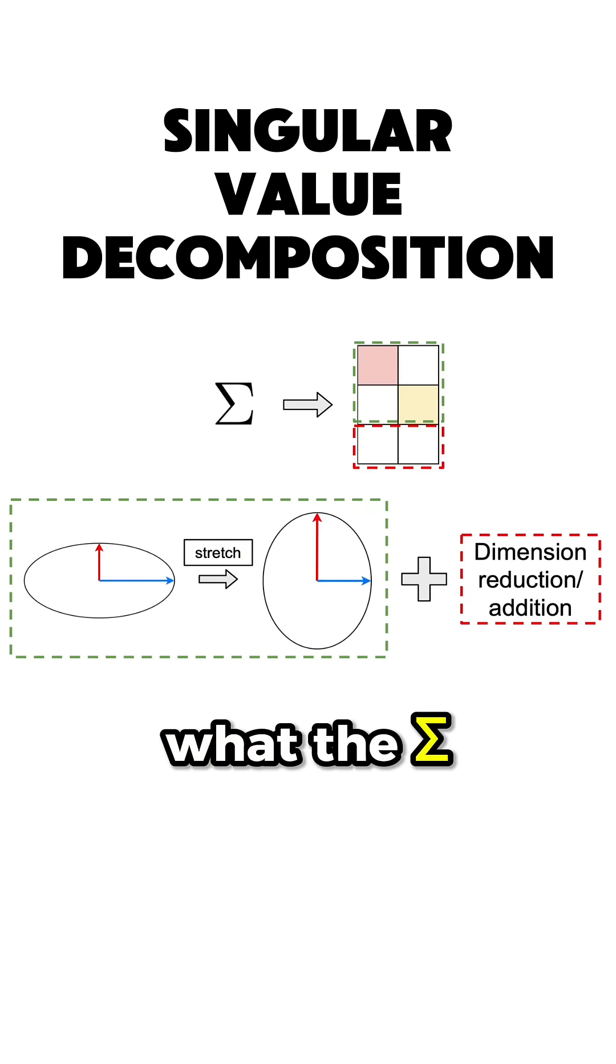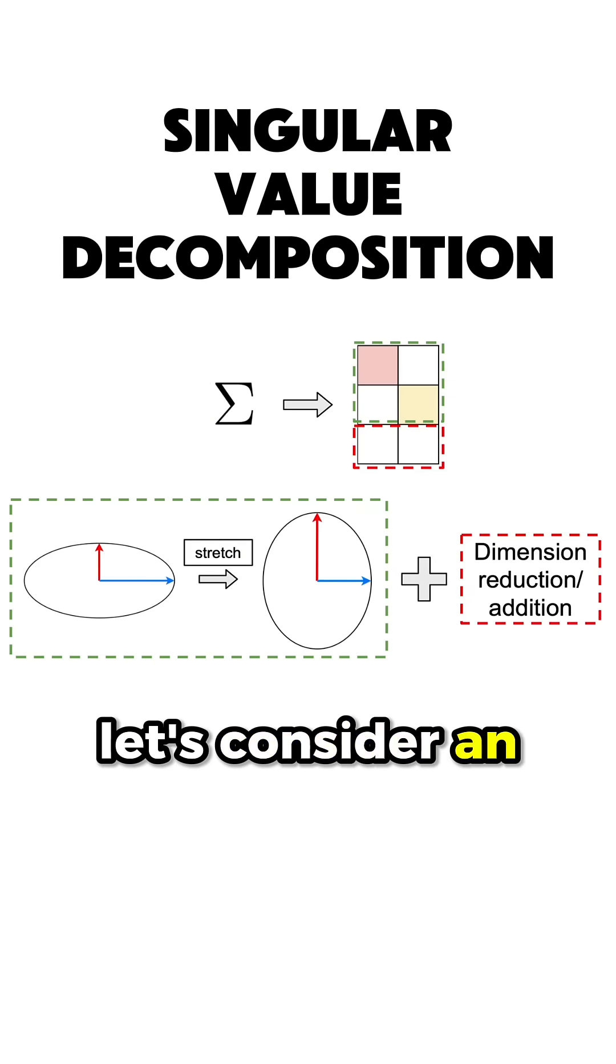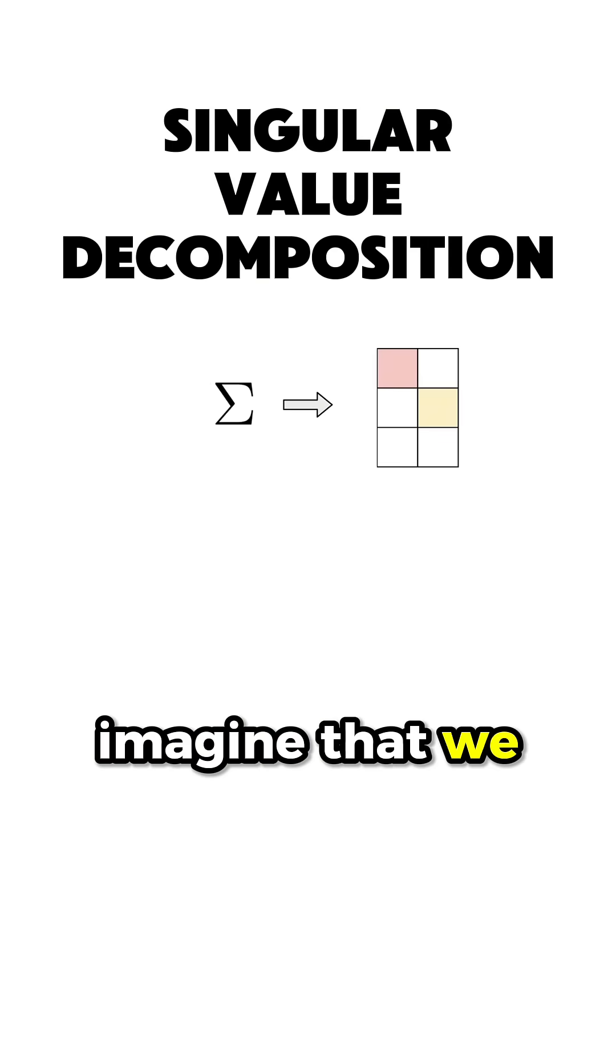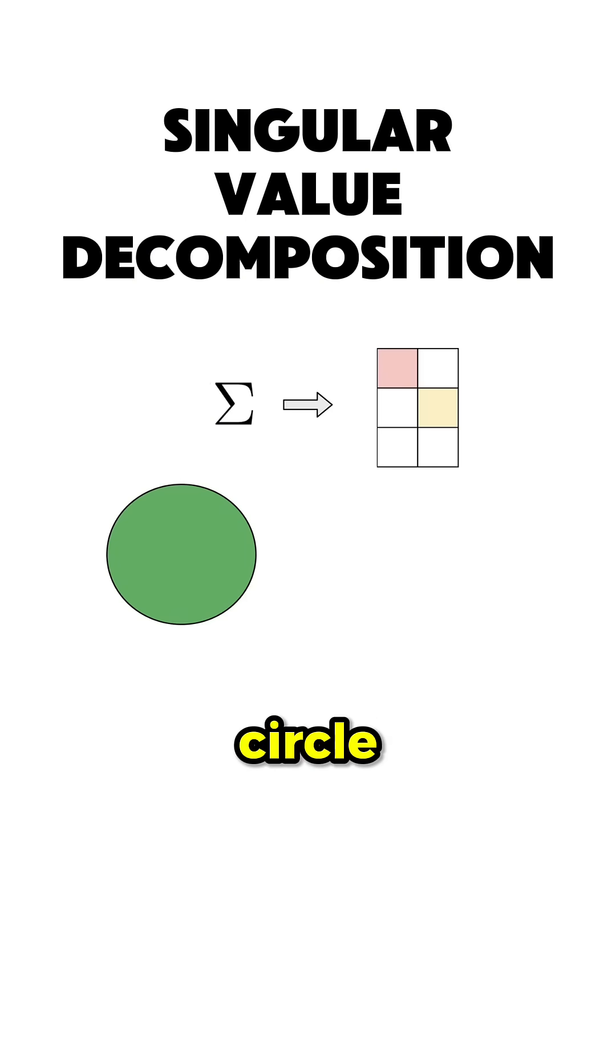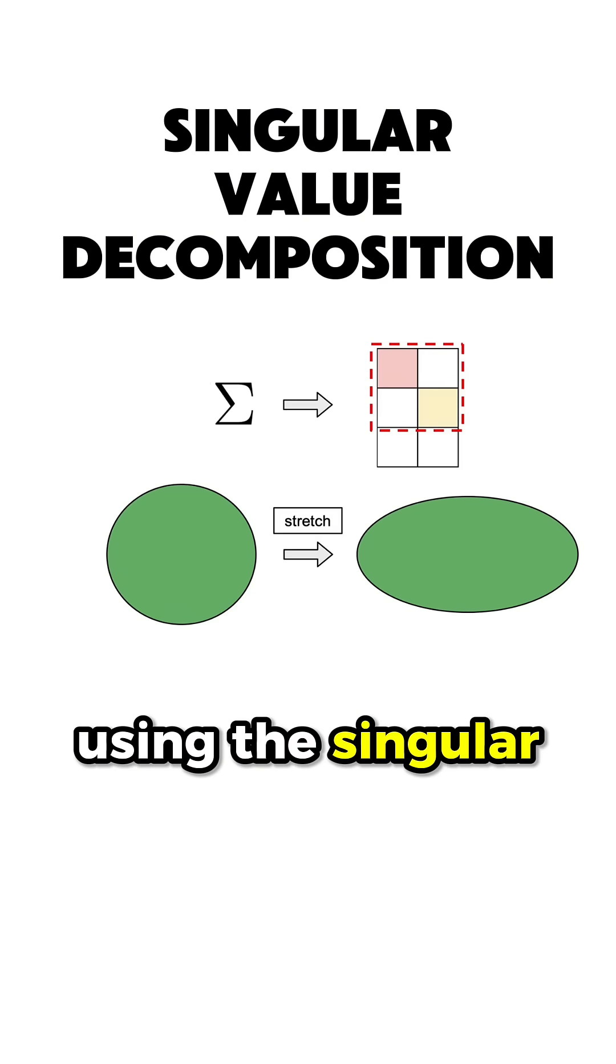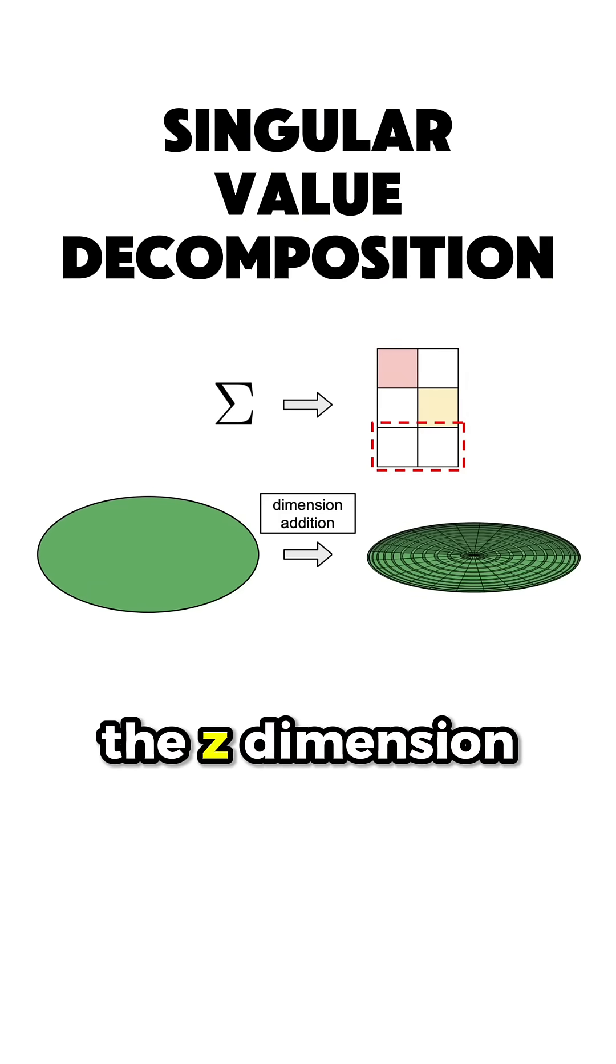To better understand what the sigma matrix does, let's consider an example. Imagine that we have the following 3x2 matrix sigma and the following circle in the 2D plane we want to project. The first thing we do is to stretch it along the x and y dimensions using the singular values, and then add the z dimension.